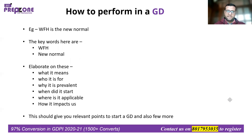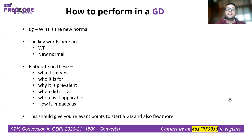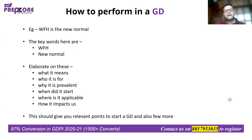Let's take an example: 'Work From Home (WFH) is the new normal.' The keywords are 'work from home' and 'new normal.' What is work from home? What does 'new normal' mean? Who is it for — it's not relevant for everyone. Why has it become prevalent? Because of COVID. When did it start? As soon as lockdown was introduced. Where is it applicable? And how does it impact us? These six questions give you roughly six points for the GD. This KWA approach can also help during interviews.